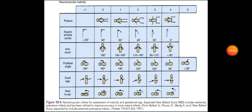Square window refers to the wrist. If the hand cannot move to less than 90 degrees, that carries negative one point. If it can go to 90 degrees, that carries zero points. Sixty degrees carries one point. Forty-five degrees carries two points. Thirty degrees carries three points. If the wrist cannot be moved at all, that carries four points.